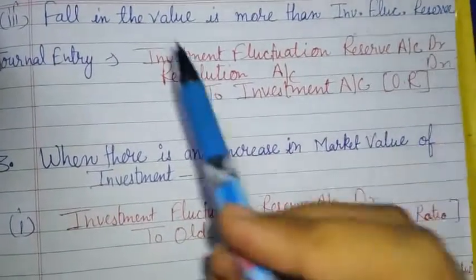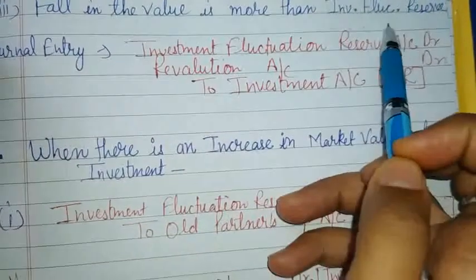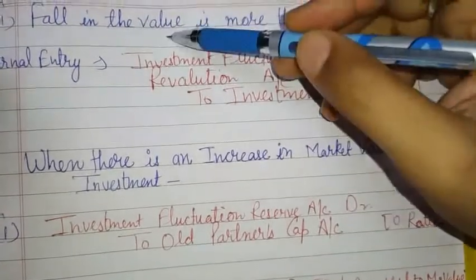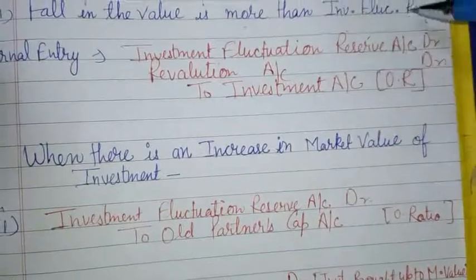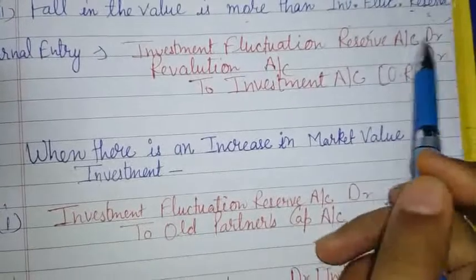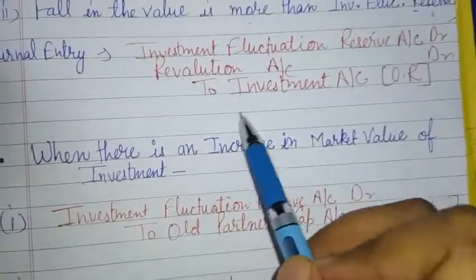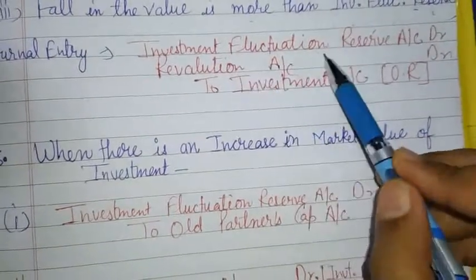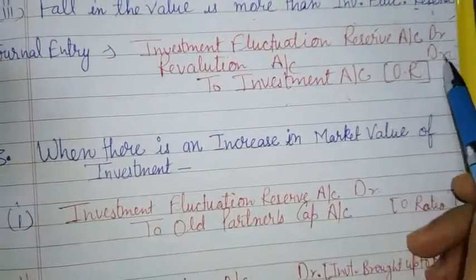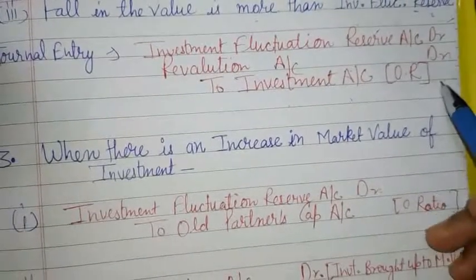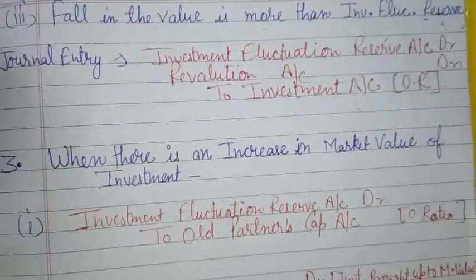The third condition under Case 2 is when the fall in value is more than the Investment Fluctuation Reserve. For example, if the reserve has 18,000 but the fall in investment value is more than 18,000, then the entry will be: Investment Fluctuation Reserve Account debit, Revaluation Account debit to Investment Account - because the extra amount beyond the reserve must be transferred to the Revaluation Account.